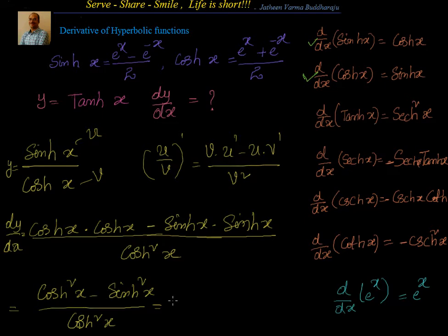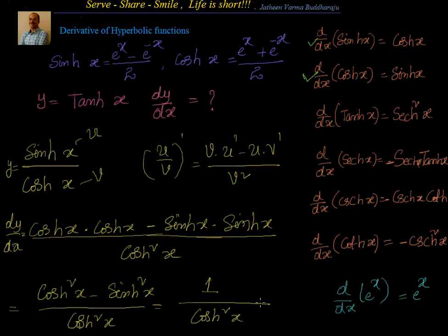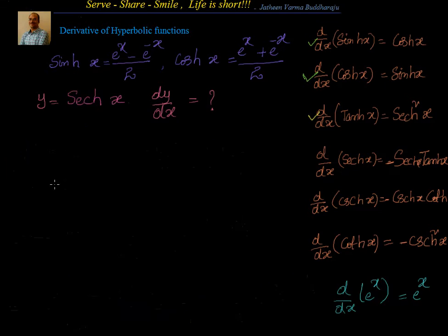So we have (cosh²(x) - sinh²(x)) divided by cosh²(x). Now, just like cos²(x) + sin²(x) = 1 for trigonometric functions, we know that cosh²(x) - sinh²(x) = 1. You can verify this by substituting the exponential definitions. So this becomes 1/cosh²(x), which is sech²(x). That is the derivative of tanh(x).